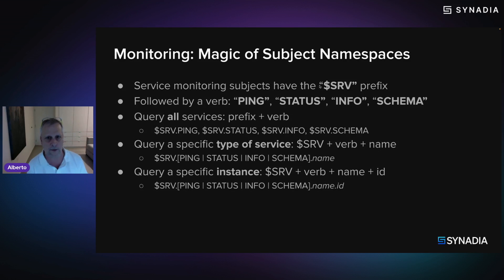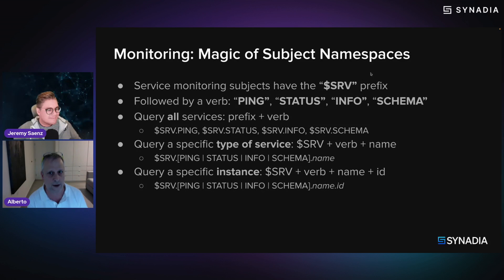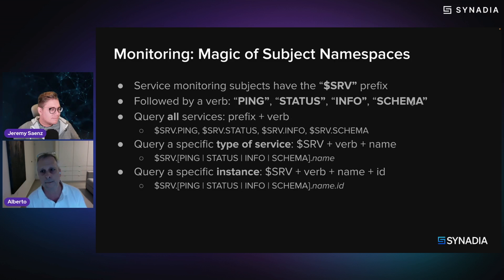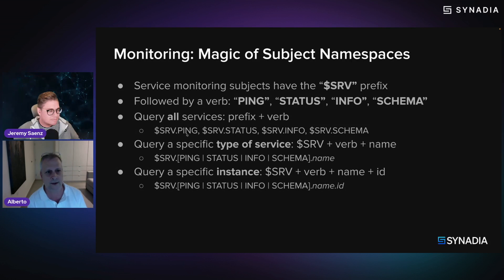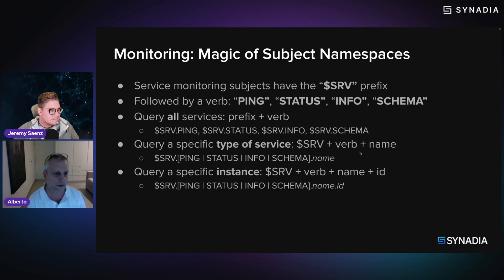By design, we have a prefix of `$SRV` for all subjects generated for service monitoring, followed by a verb. The verb `PING` means 'everyone show me some info.' We have `STATUS` which reports usage information, `INFO` which returns the same data as ping, and `SCHEMA` which reports the schema for the service. To query all services running on the cluster, you say `$SRV.PING`. You can similarly gather their status, info, or schemas. To target a specific kind of service, add the service name. To target a specific instance, use the service ID.